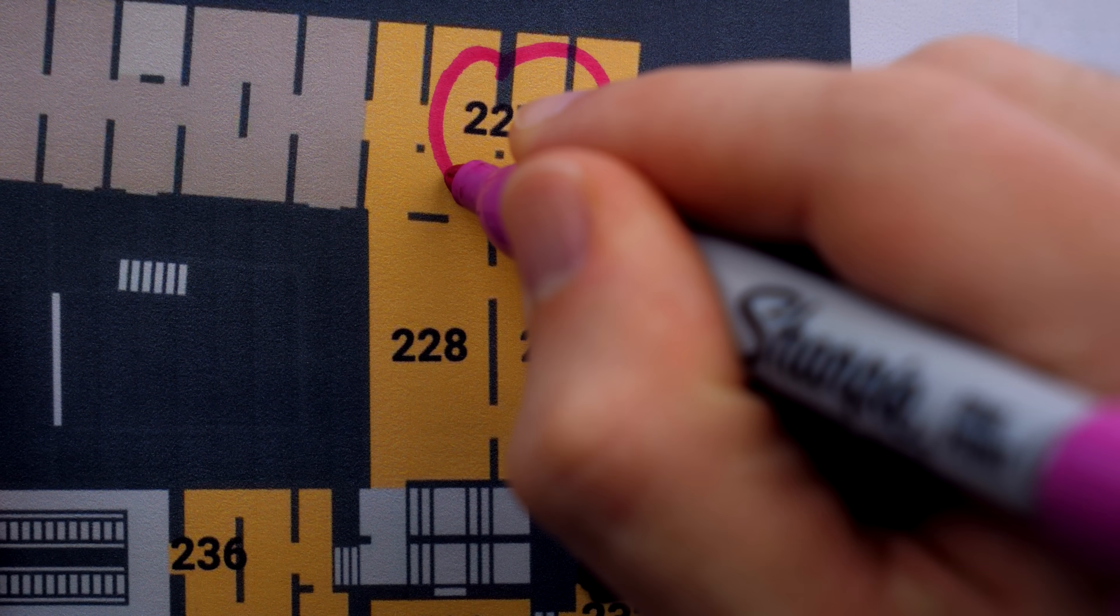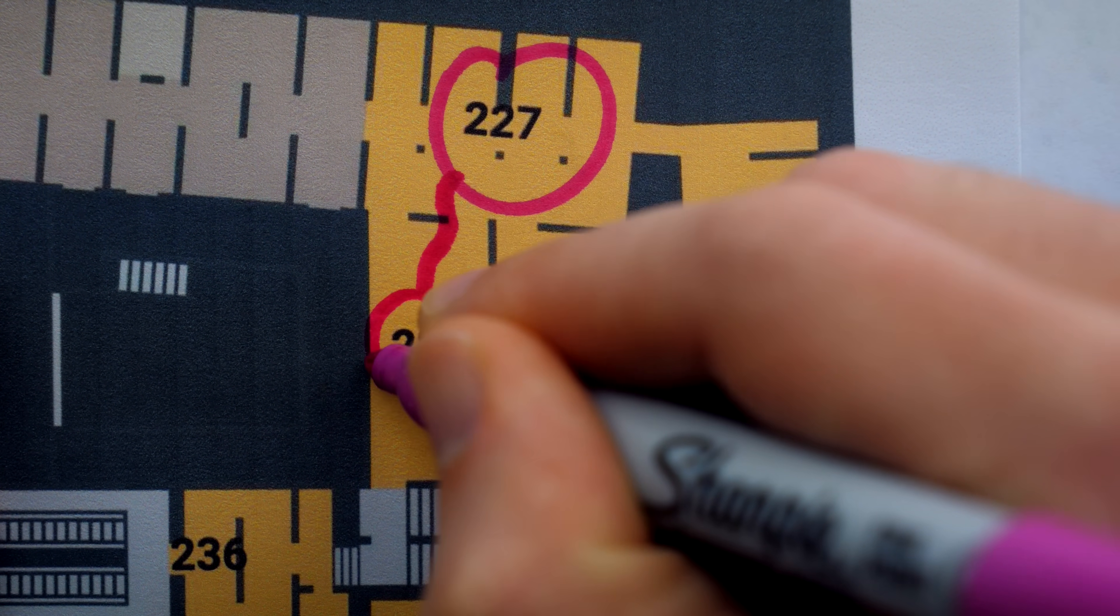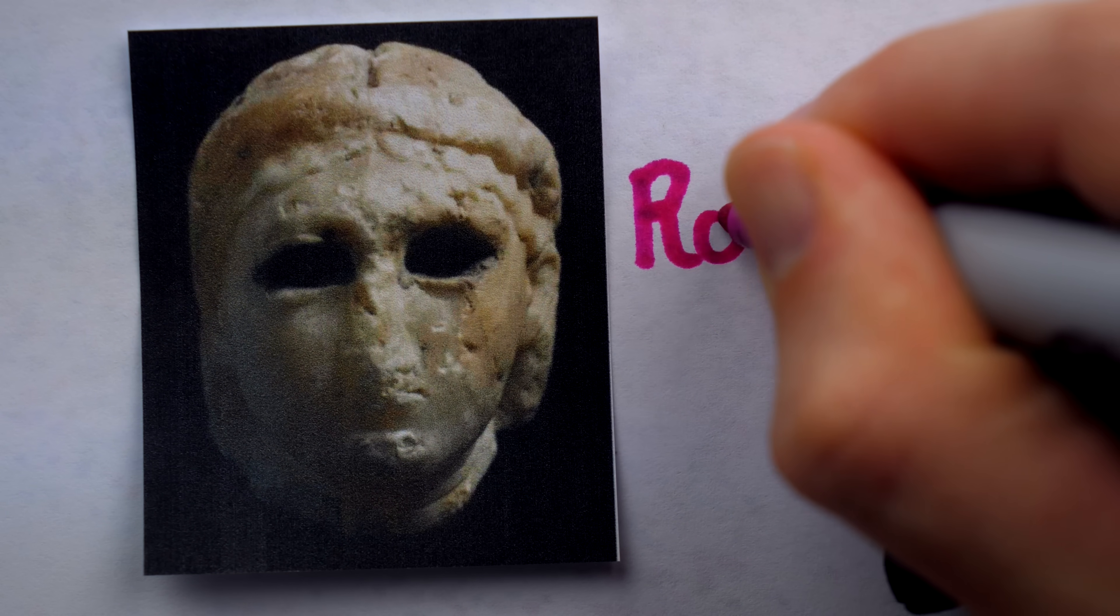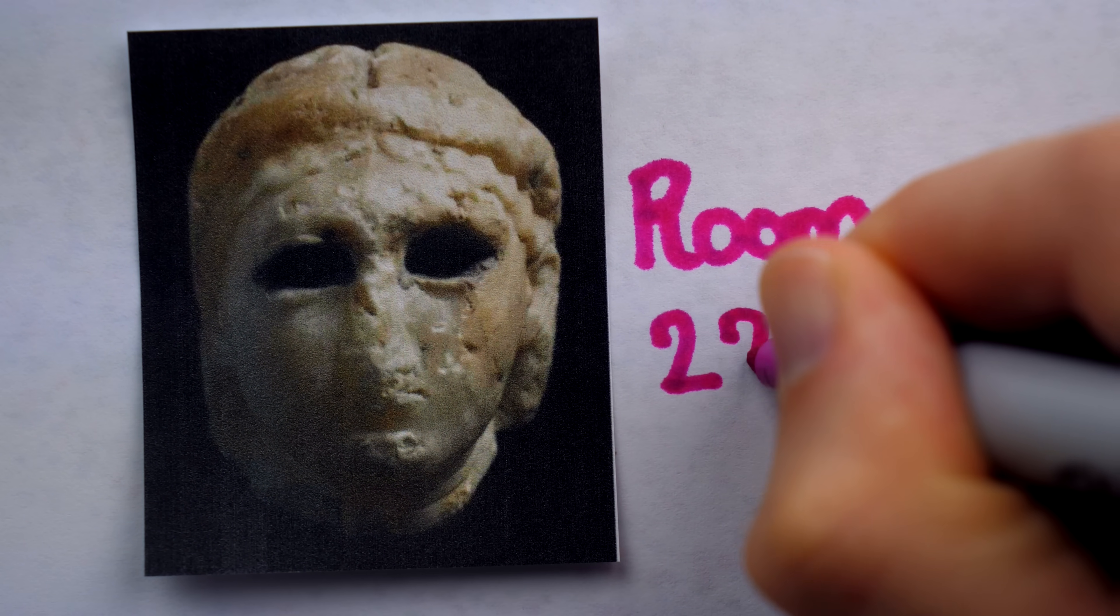Going in the direction of the nearest staircase, you'll enter room 228, where you'll find a chipped statue of the head of a woman.